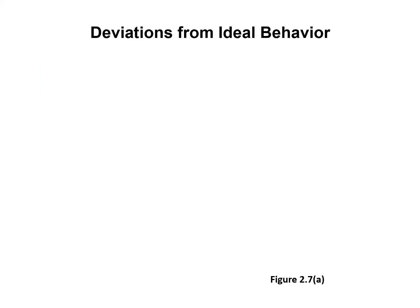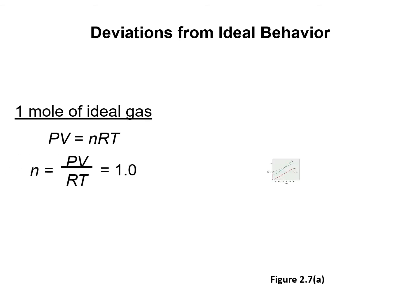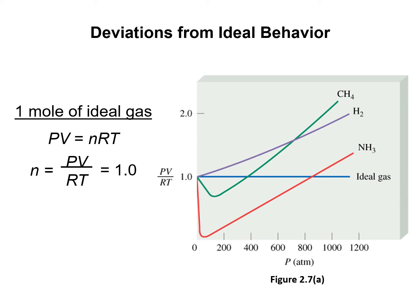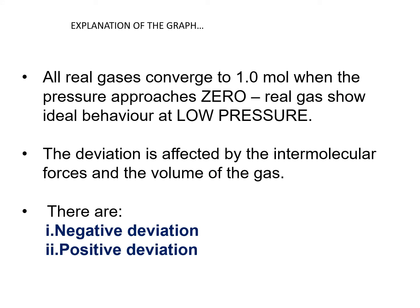Real gas deviates from ideal behaviour as shown in figure 2.7a. Let's say we have 1 mole of ideal gas. By using PV = nRT, we plot N equals to PV over RT equals to 1. All real gases converge to 1 mole when the pressure approaches 0, showing that real gas has ideal behaviour at low pressure. The deviation is affected by the intermolecular forces and the volume of the gas. There are two types of deviation: negative and positive.